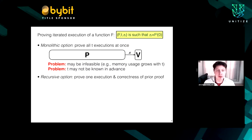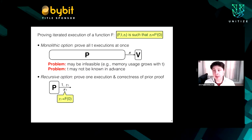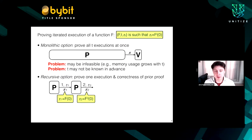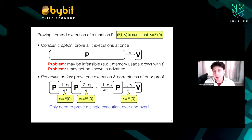Also, the value of T may not be known in advance. Maybe this iterated application of the function is just some ongoing computation, and there is no specific T that you have in mind. This motivates the so-called recursive option. The intuition is that you want to prove one execution of F and also the correctness of the prior proof. You use the SNARK to argue one application of F to 0 leads to Z_1; then in the second step you prove going from Z_1 to Z_2 through F, and you also prove that you verified the prior SNARK. You can continue in this fashion as long as you want, with no large memory consumption.